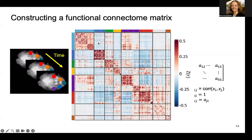This is an example of an actual functional connectivity matrix. You can see that different sections of the brain, delineated by lines, have very different patterns of connectivity with other sections. And there are also highly connected parts of the brain that usually correspond to those resting state networks mentioned earlier.